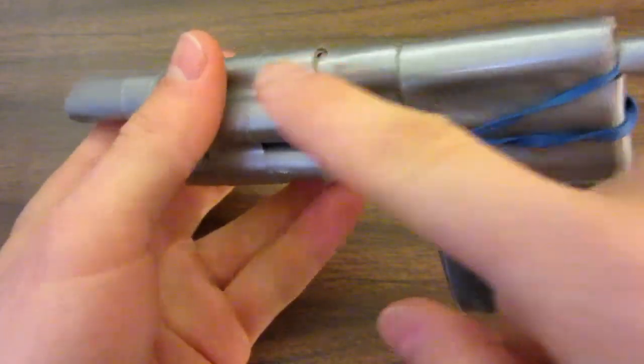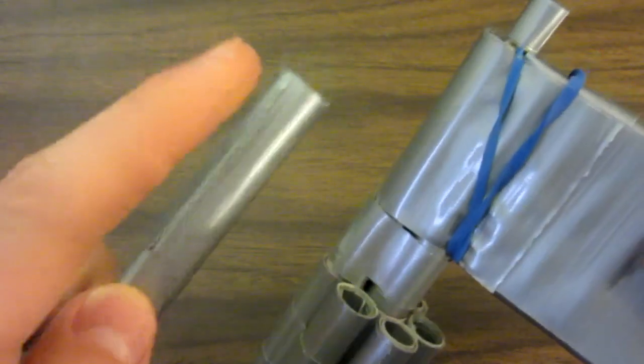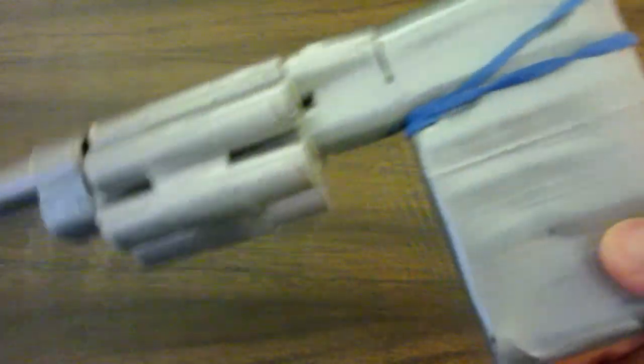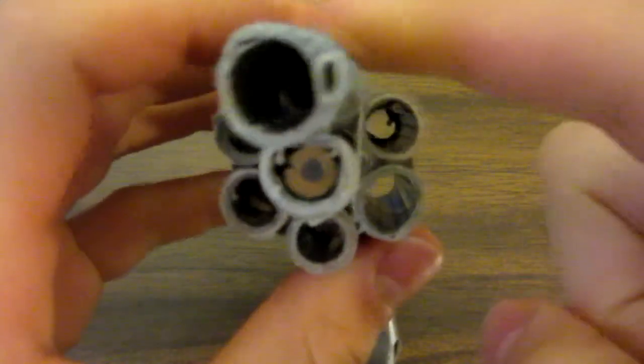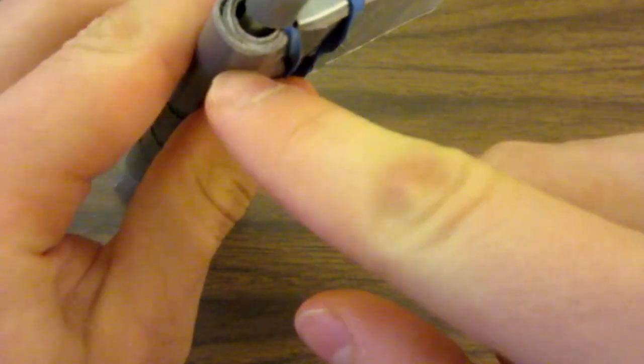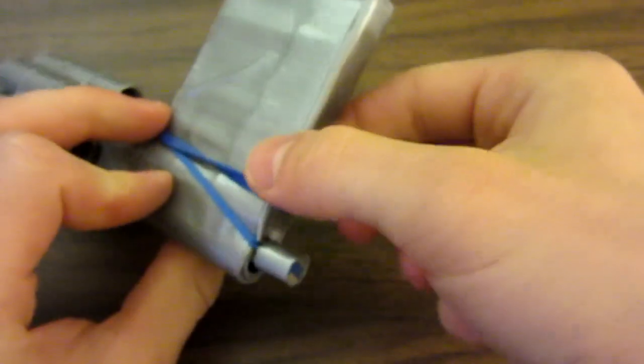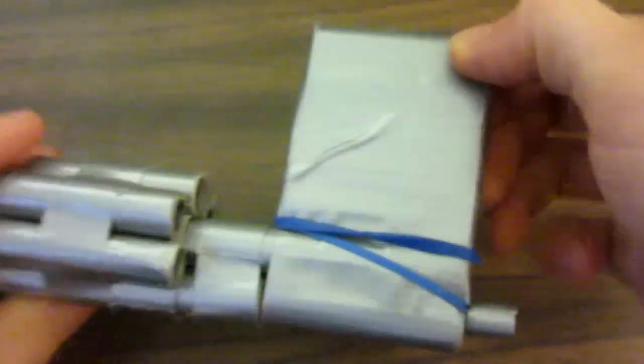Now we're going to be making the cylinder and the handle, and what they are are simply one length of this. As you can see, you will need to make six cylinders here, along with for the handle you will need another six. So we need to make twelve of them.